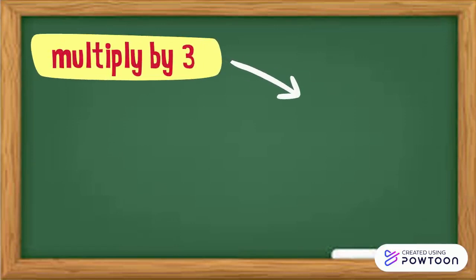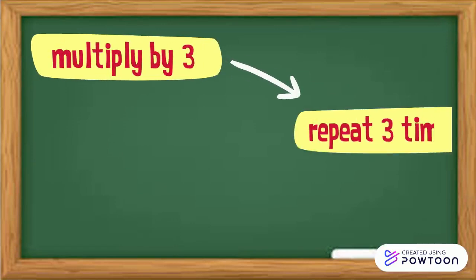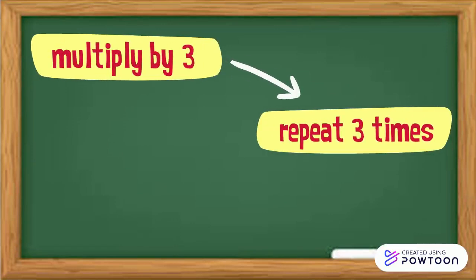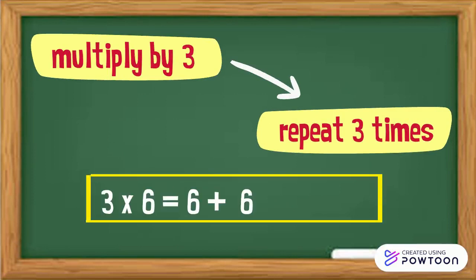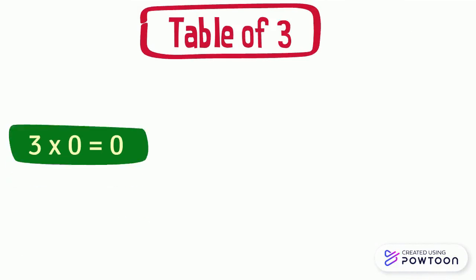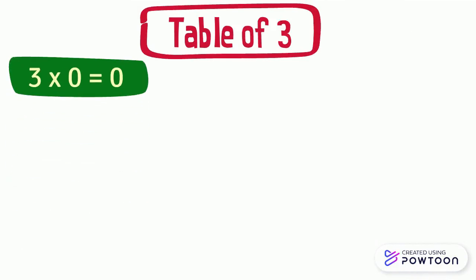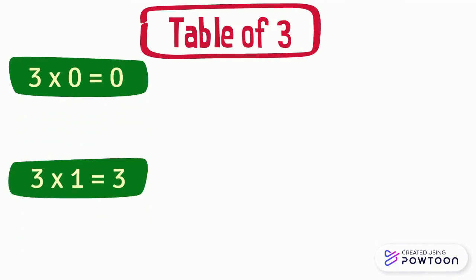So to multiply a number by three, it is enough to repeat this number three times. Three times six equals six plus six plus six equals eighteen. You should study by heart the multiplication table of three.